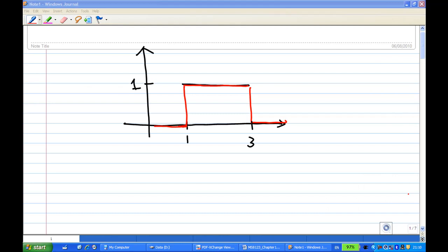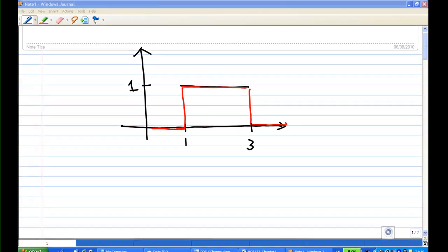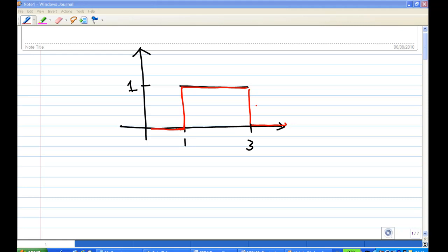One of the applications of the unit step function is to create a window such as a function equal to 1 for t between 1 and 3 and otherwise is equal to 0. We can create this function easily by using unit step function.